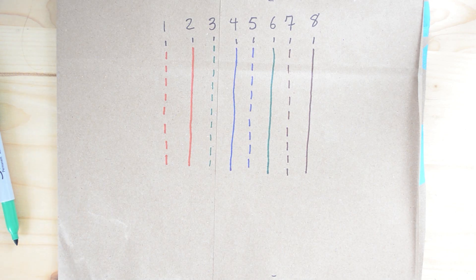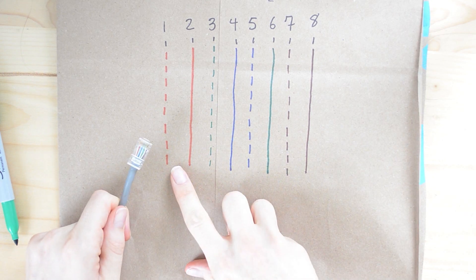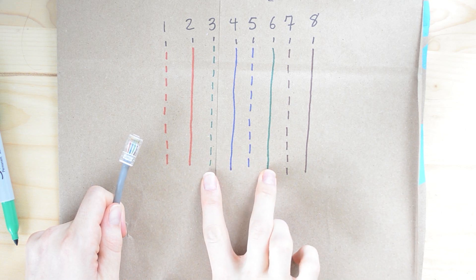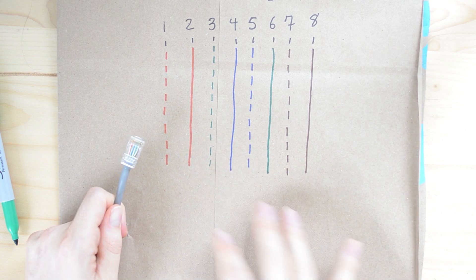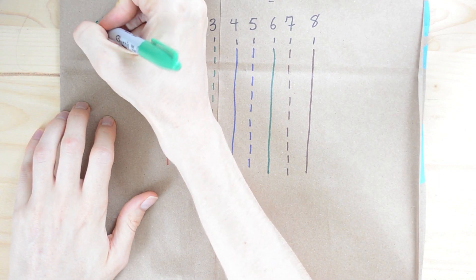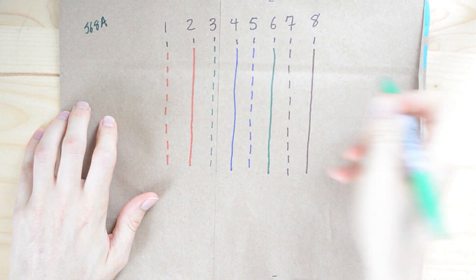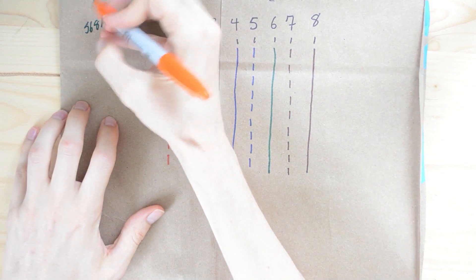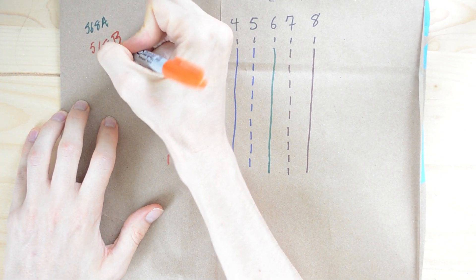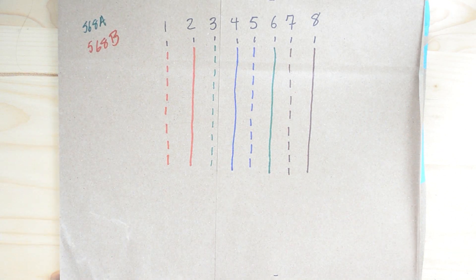The only difference is that on some of these Cat5 cables, instead of starting with white-orange, they start with white-green. Pretty much white-orange and white-green-green are completely flipped. When it's flipped, it is called 568A order. When it's just like I have drawn here, it is 568B order. You'll see either one of those.